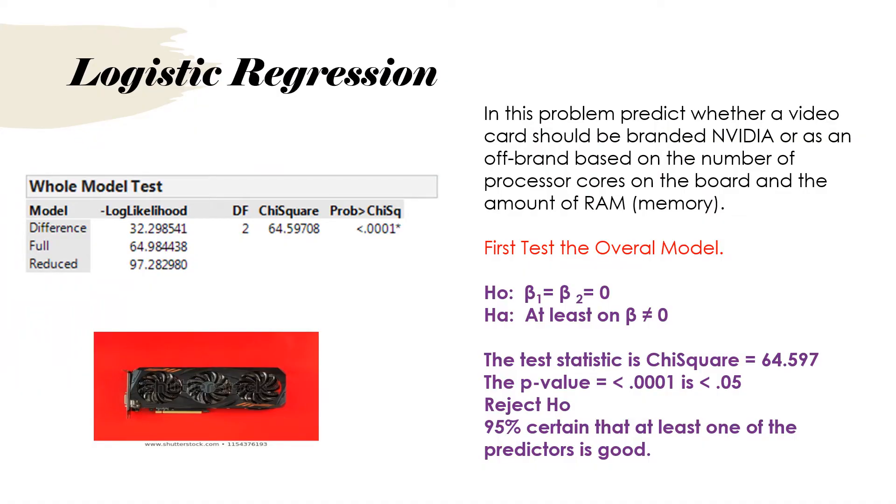So what we have is an NVIDIA card maker for computers. And they're either going to be branded NVIDIA if they're good enough, or they'll be branded as an off-brand. So what we've got are two variables that are going to help us predict this. There are going to be number of cores on the board and the amount of RAM memory on the board for the video card.